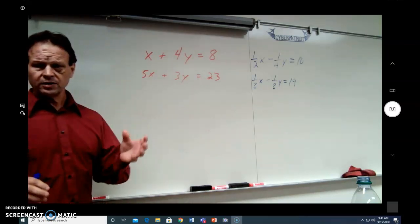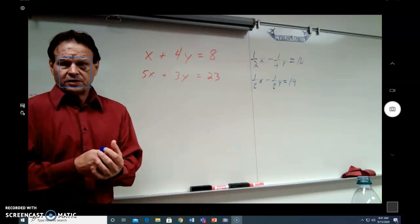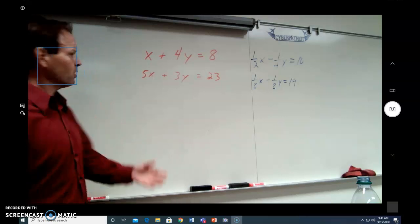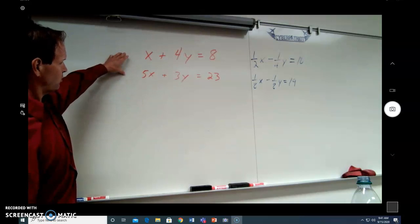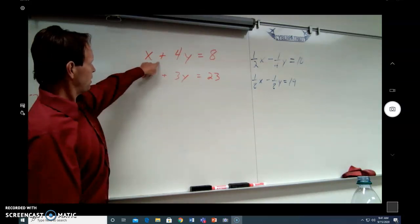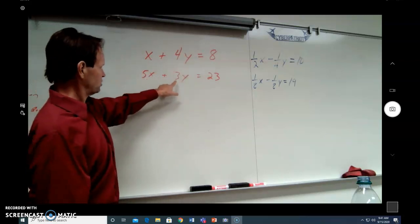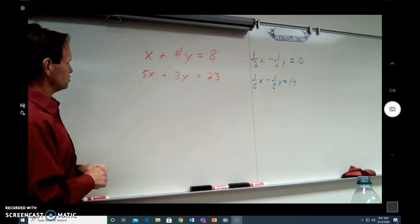There are generally two systems of solving these kinds of equations: substitution and elimination. And we're going to look at this problem right here as an example of a system of equations. Notice we have x plus 4y equals 8, and 5x plus 3y equals 23, and both of these equations go together.